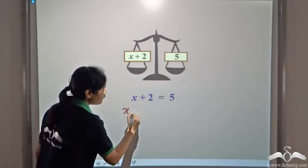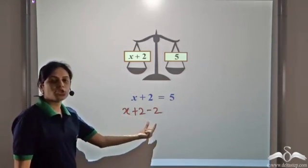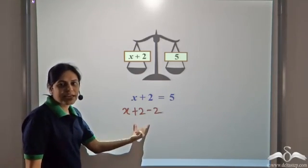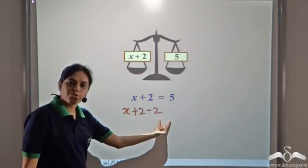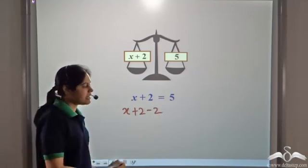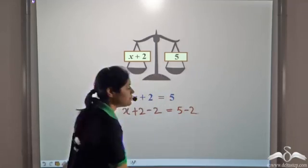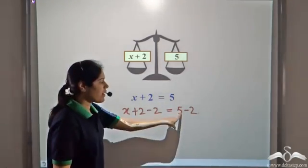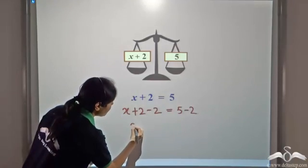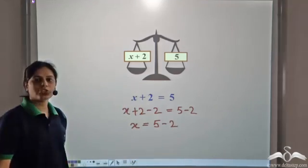So we have x plus 2 minus 2. Now whatever we do to one side, we must do to the other side of the equation. Since we have written a minus 2 on the left hand side, we must write a minus 2 on the right hand side as well. So we get x is equal to 5 minus 2.